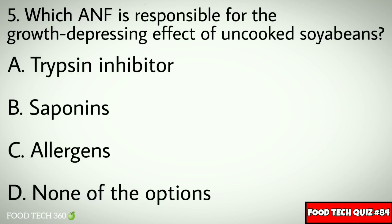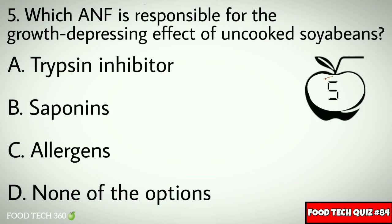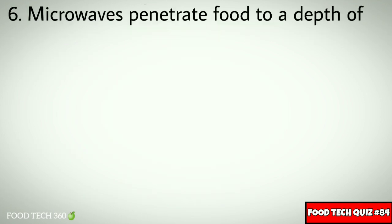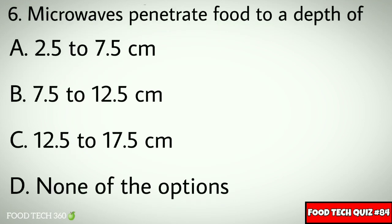Question number 5: Which anti-nutritional factor is responsible for the growth depressing effect of uncooked soybeans? Options: A. Trypsin inhibitor, B. Saponins, C. Allergens, D. None of the options. Correct answer: A. Trypsin inhibitor.